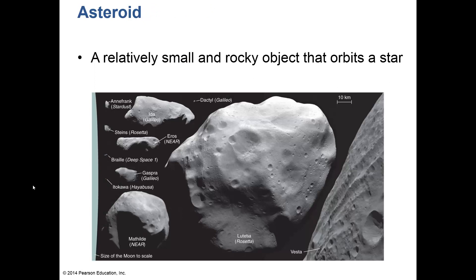There's also leftover stuff in the universe. One of these is asteroids — relatively small, rocky objects that orbit a star. Some orbit planets like the earth, but most asteroids are found between Mars and Jupiter in the asteroid belt. We have sent a number of spacecraft to go to asteroids to check them out.